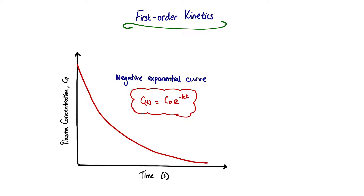More specifically, this negative exponential function is: C(t) is the plasma concentration as a function of time; C0 is the initial plasma concentration, the value on the y-axis at time zero; e is Euler's number with a value of approximately 2.7; k is the rate constant of elimination; and t is time. We'll talk about this equation in far more detail in a later video.